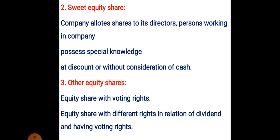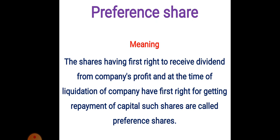Now we will see preference shares. The meaning of preference share: shares which have the first right to receive dividend from a company's profit, and at the time of liquidation have the first right for repayment of capital — such shares are called preference shares. Equity shares have the last right, while preference shares have the first right to get dividend from profit and the first right at the time of liquidation to get repayment of their capital.